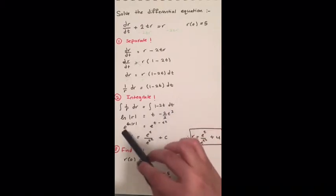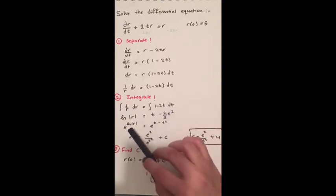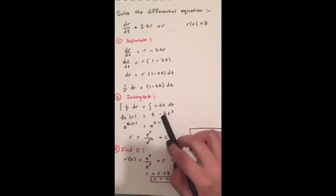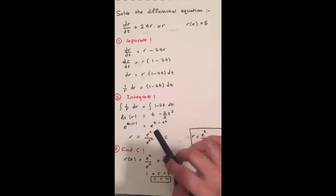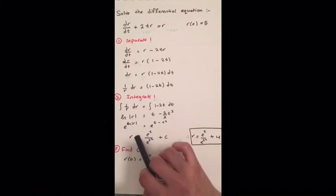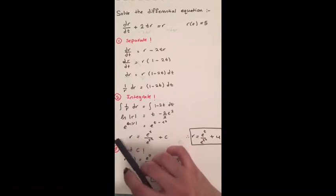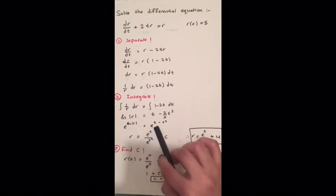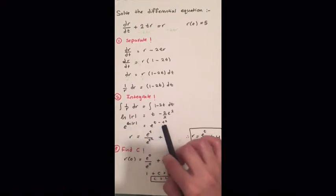We need to make sure that we are integrating with respect to r on the left side, and with respect to t on the right side. Now we will take e of both sides of the equation — this step is just to make the equation a little bit simpler. We will get e to the natural log of absolute value of r equals e to the (t minus t squared).